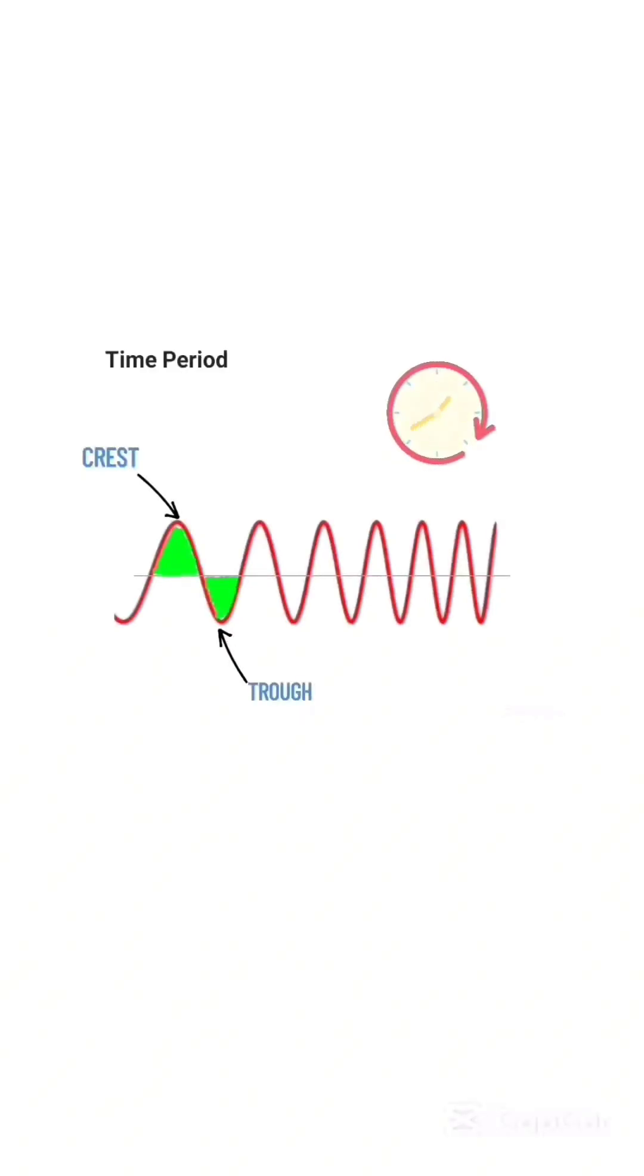The time it takes to complete one wave cycle is called time period. It is measured in seconds and denoted by uppercase T.